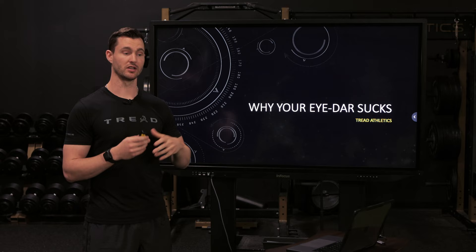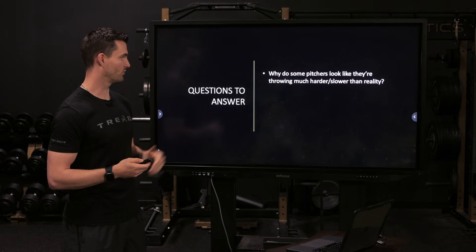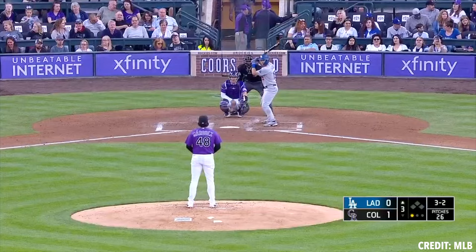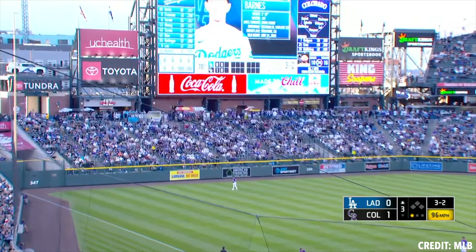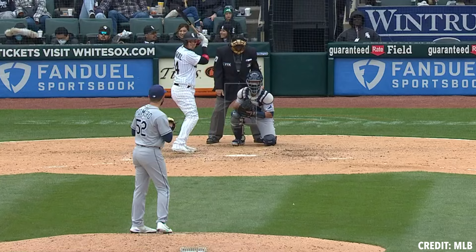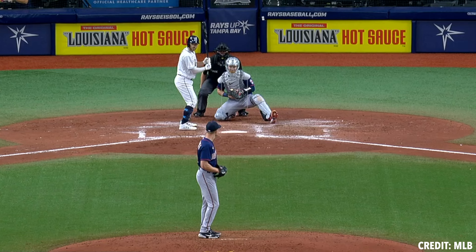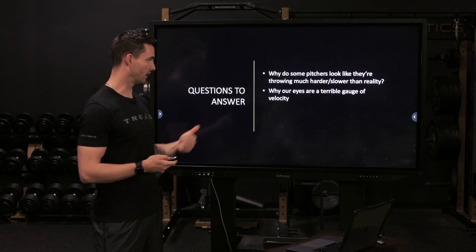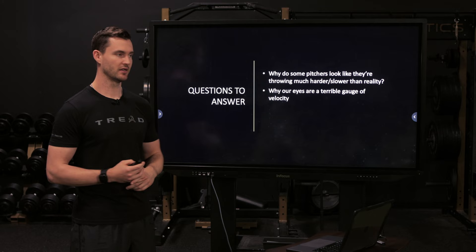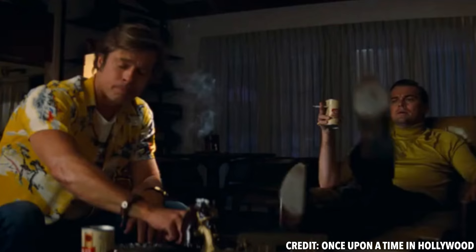Some questions to answer: one is why do some pitchers look like they're throwing so much harder or slower than the reality? Why do some guys come out of the game at 95, 94 but it just looks slow? And then the opposite happens too — a guy looks like he's throwing absolute gas, turns out he's throwing 88, 89, 90. Two, why are our eyes a terrible gauge of guessing velocity alone? And three, maybe by the end of this we can understand why some people feel the need to comment 'that's 85 tops' on videos of pro pitchers throwing 95, 97. Let's dive in.